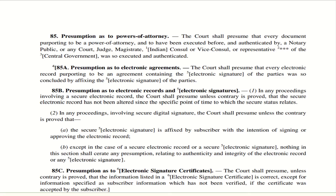Section 85B — Presumption as to electronic records and electronic signatures. If there is an electronic record from a secure source, the court shall presume that it has not been altered at the specific point of time to which the secure status relates. In subsection 2, if a proceeding involves a secure digital signature, the court shall presume — unless the contrary is proved — that the electronic signature is affixed by the subscriber with intention to sign and approval of the electronic record. However, nothing in the section shall create any presumption relating to authenticity and integrity of a non-secure electronic record or signature. Whatever is secure is deemed acceptable; if not secure, the presumption will not lie.